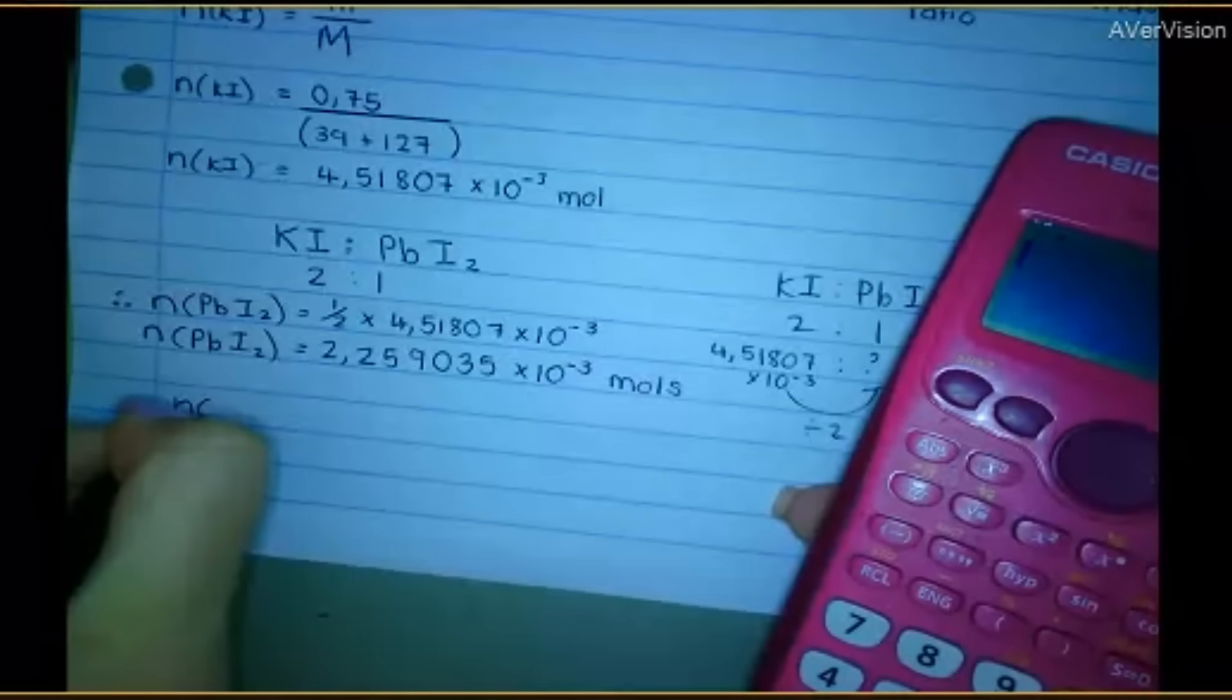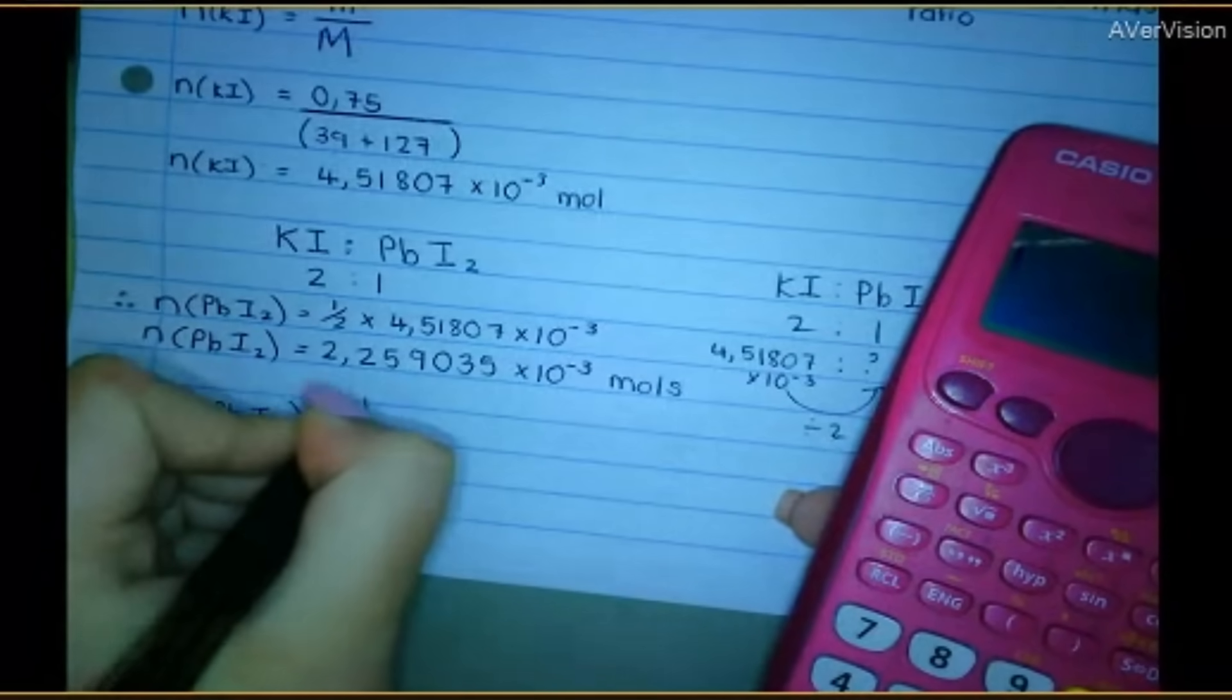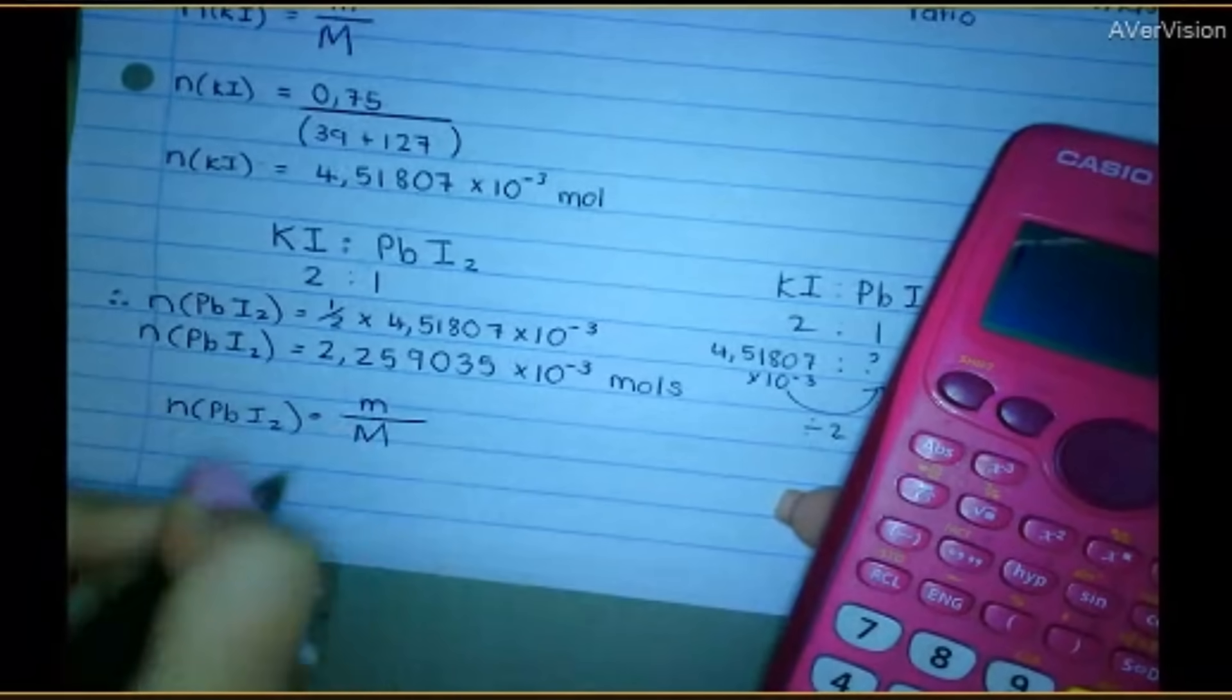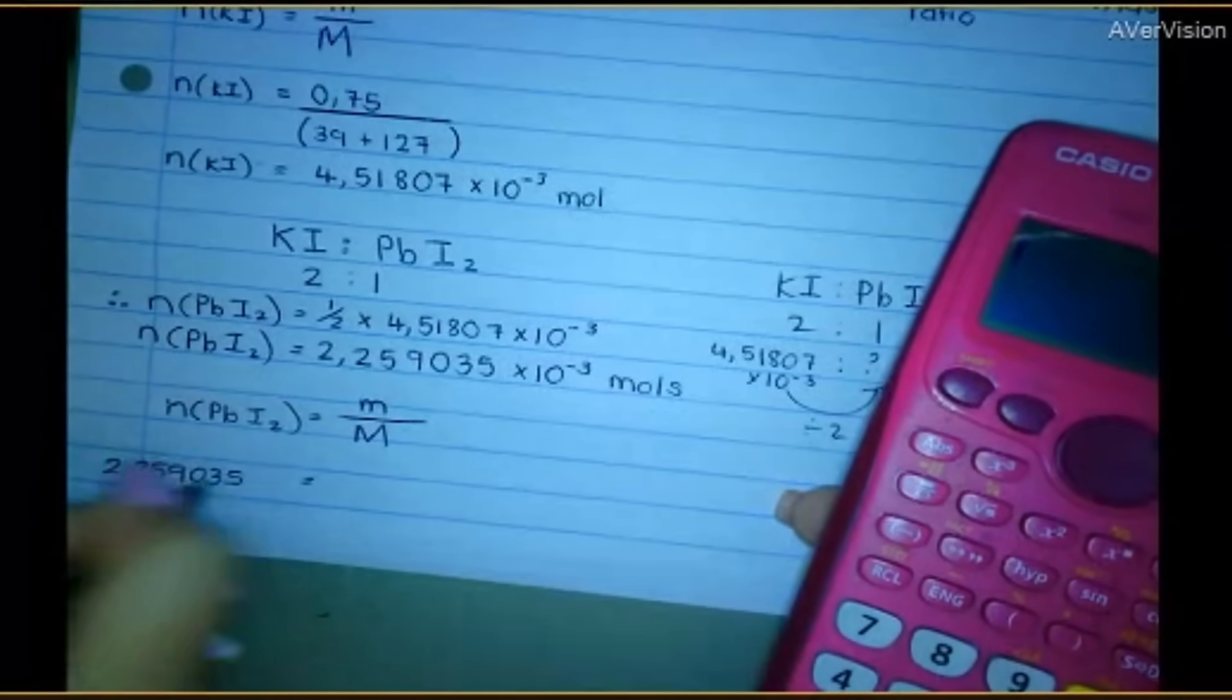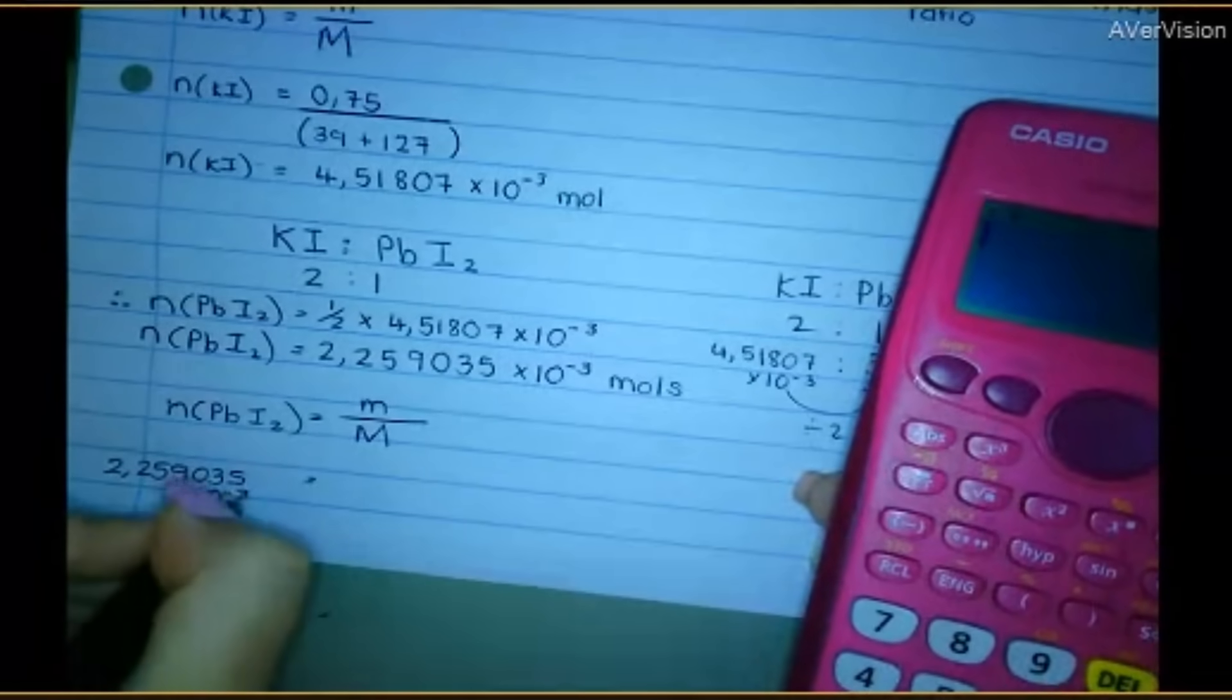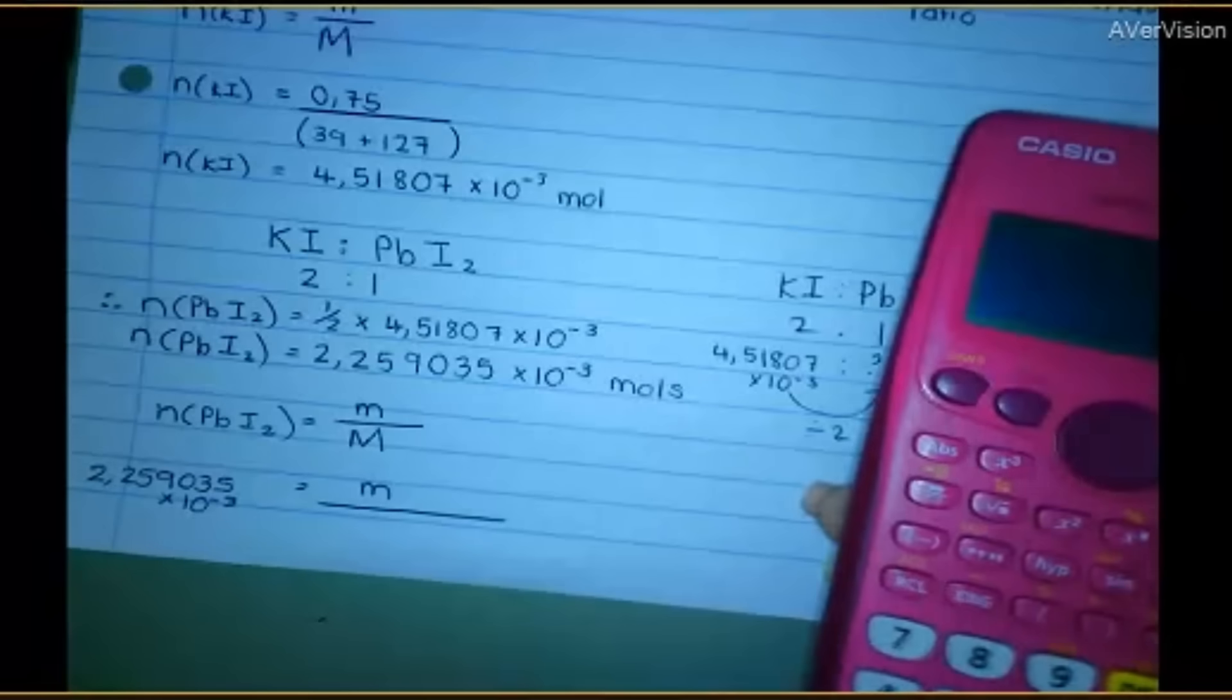So how do you go now to convert from moles to mass? You use this formula. So I've got the moles. It's 2.259035 times 10 to the negative three. Mass is what I'm trying to find. Molar mass. Now I just have to do the calculation.